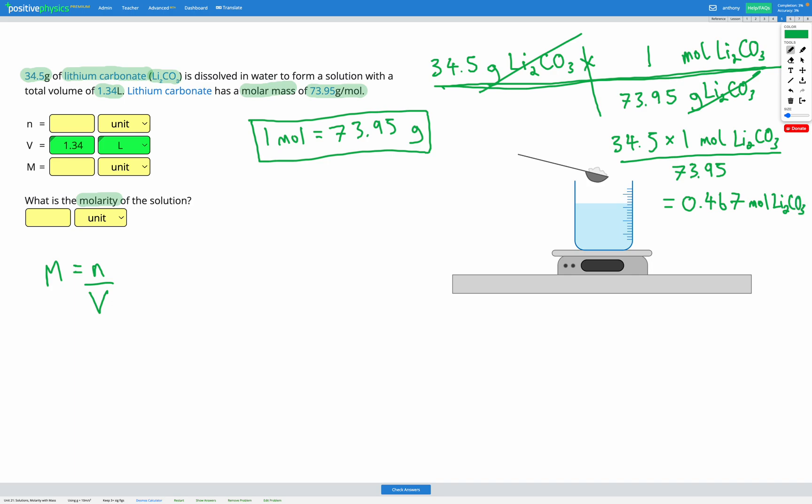So what we did there was we took the mass and used the molar mass in order to figure out how many moles we have. So that's going to be our n. We can go ahead and fill that in here. The number of moles is 0.467 moles of lithium carbonate. So we've done our conversion from mass to moles.